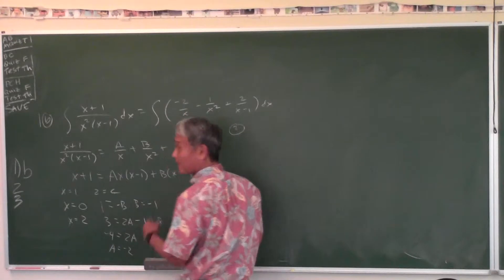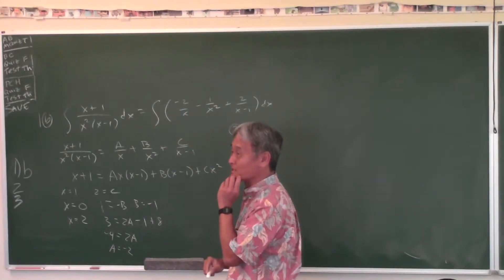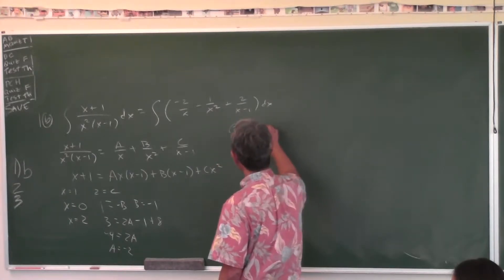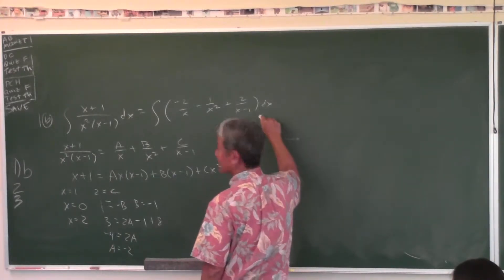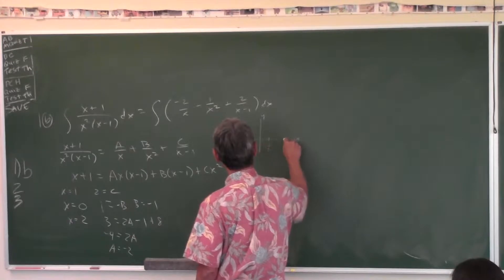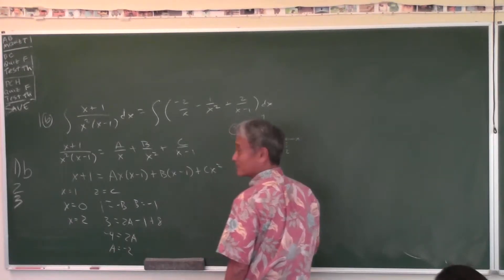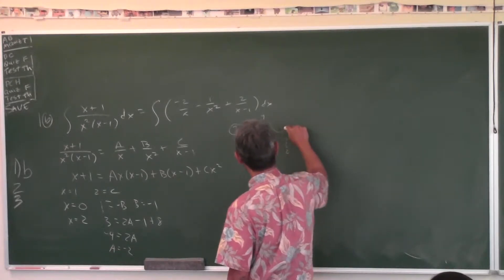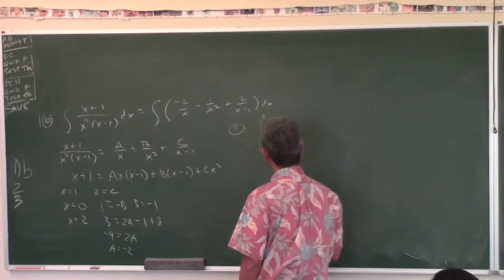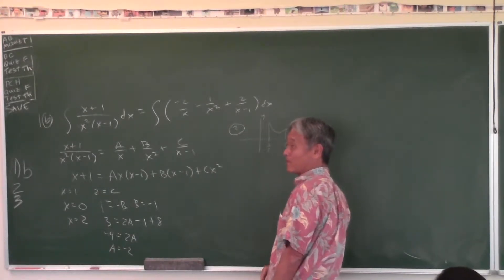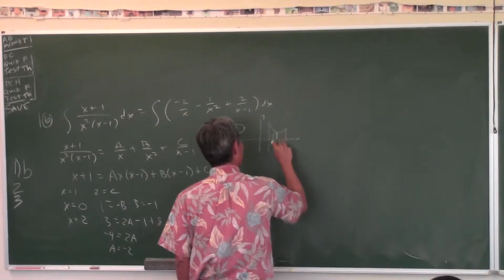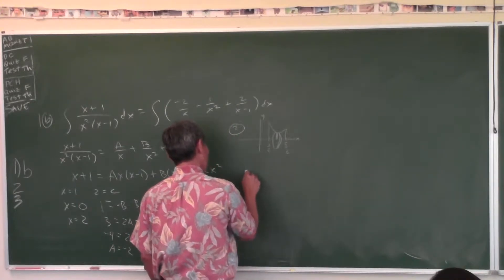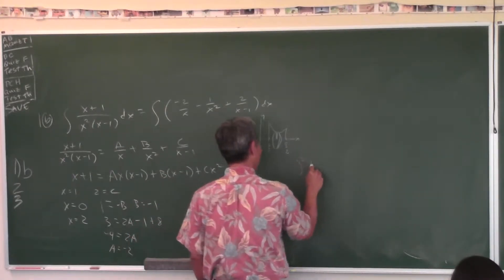Problem 2: R is the region bounded by those curves. The graph looks something like this. Revolve it about the x-axis. If you draw the rectangle in and revolve it about the x-axis — what a surprise — it's a disk.